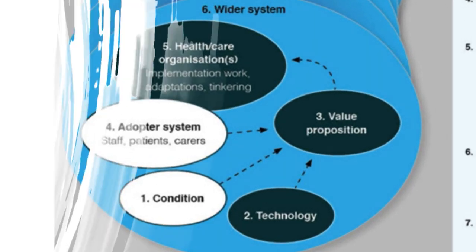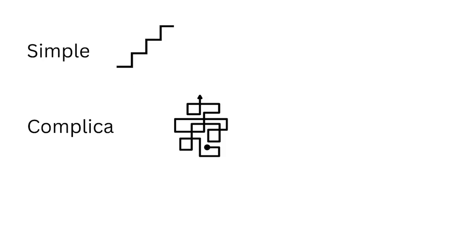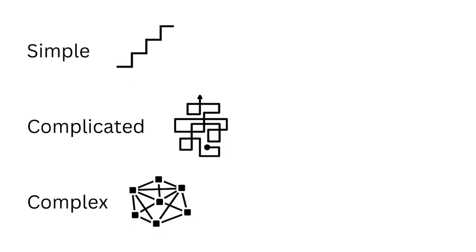NAS encourages us to think of the multiple influences on a complex project. We can then identify parts of the project that are simple, complicated and complex. Once we've identified what's simple, what's complicated and what's complex, we can work with organisations to see where this complexity might be reduced. We can also consider how individuals and organisations might be supported to handle the remaining complexities better, improving our chances of successfully adopting new technology in healthcare.